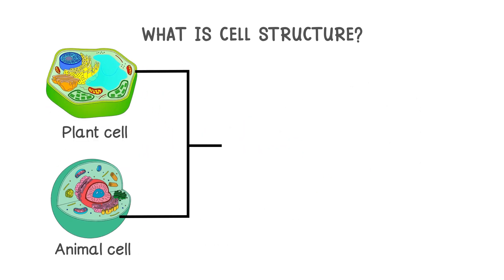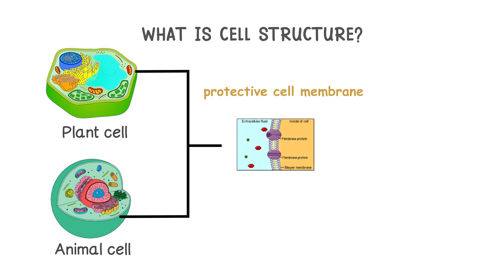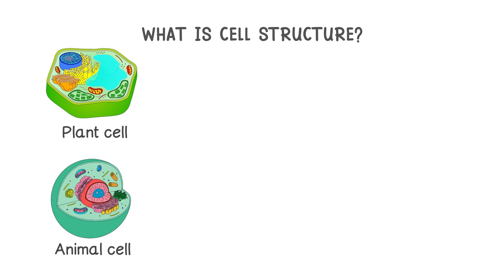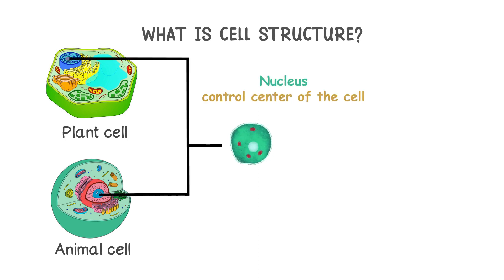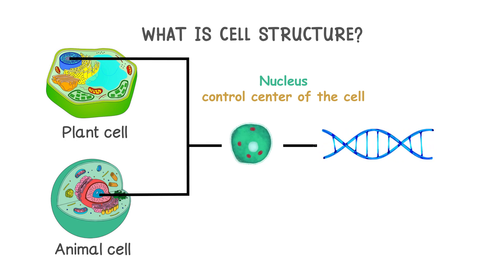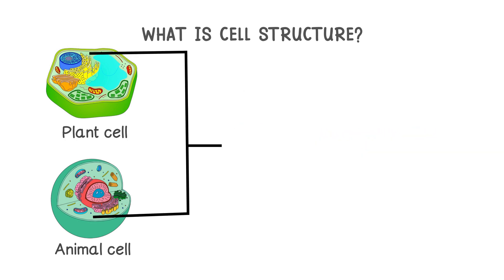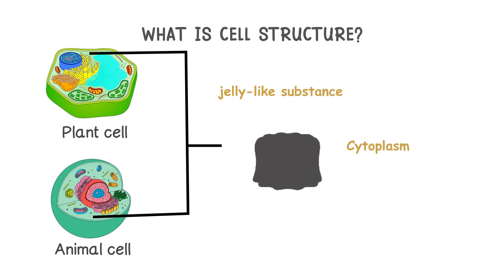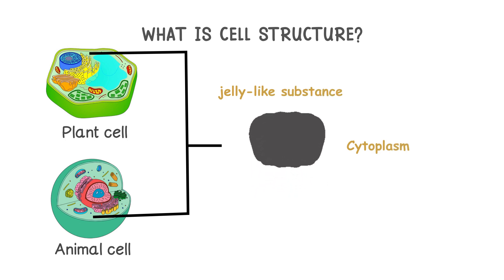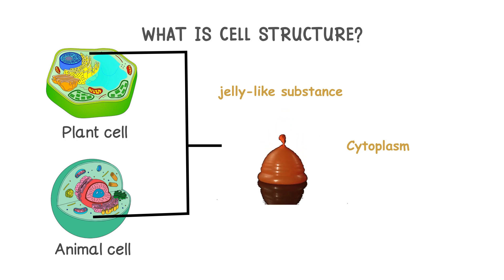Both animal and plant cells are surrounded by a protective cell membrane, which acts as a gatekeeper controlling what enters and exits the cell. Inside you'll find a nucleus — the control centre of the cell — housing the genetic material, also known as DNA. Both cell types are filled with cytoplasm, a jelly-like substance where chemical reactions take place. Think of it like water filling a water balloon — this cytoplasm provides the stage for all cellular action.